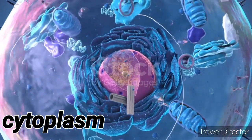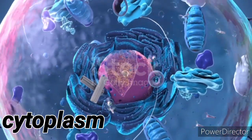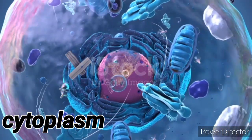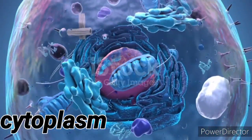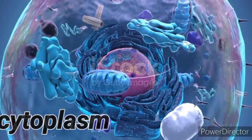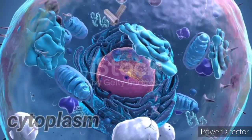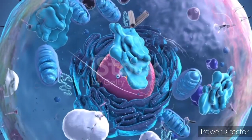Cytoplasm is a semi-fluid substance mainly composed of water, salts, proteins, and organic molecules. It surrounds the cell's organelles and facilitates their functions by providing a medium for chemical reactions and the movement of cellular components.